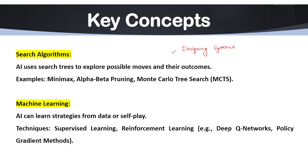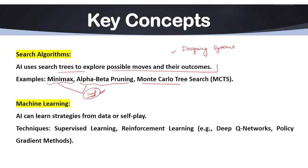Now let's look at some key concepts. The first key concept is search algorithms. AI uses search trees to explore possible moves and their outcomes. Important examples include the minimax algorithm, alpha-beta pruning — both of which we will discuss in detail in a future video — and Monte Carlo Tree Search, or MCTS.